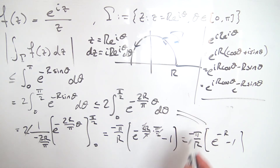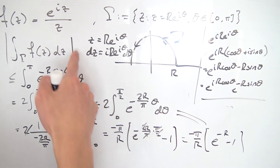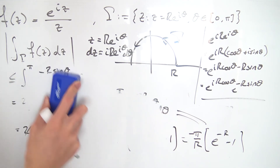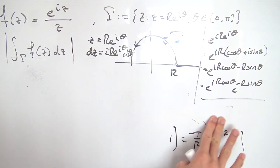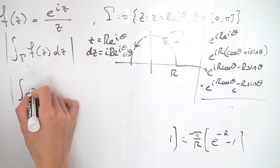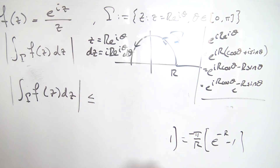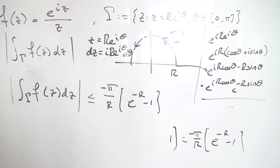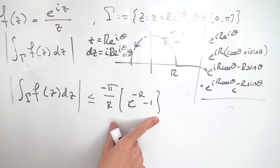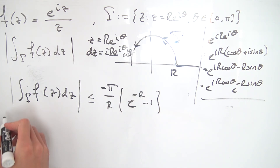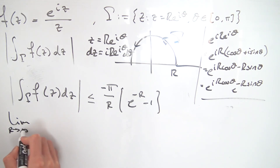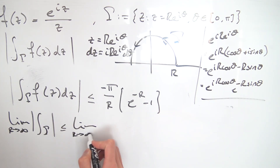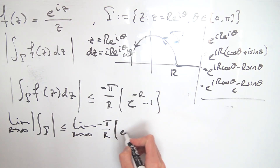What we've shown is that the absolute value of the integral over gamma is bounded above by minus pi over r times (e to the minus r minus 1). Now we take the limit as r approaches infinity on both sides. The right-hand side goes to zero — the 1 over r factor kills everything, and the decreasing exponential pulls things down to zero as well, with no indeterminate forms.